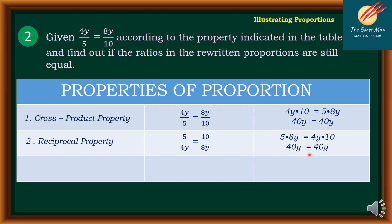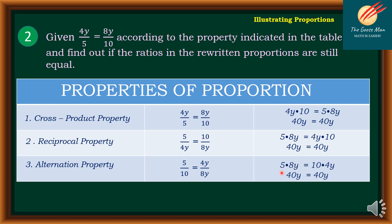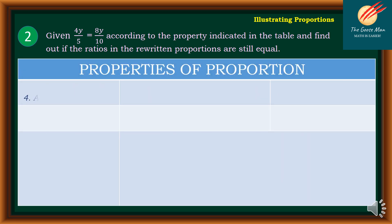Moving on to the alternation property: 5 over 10 is equal to 4y over 8y. Using the cross-product, 5 times 8y is equal to 10 times 4y, giving 40y equals 40y — still a proportion. Moving on to property number 4, the addition property: 4y plus 5 all over 5, is it equal to 8y plus 10 all over 10? Using cross-multiplication and the distributive property, 10 times 4y equals 40y and 10 times 5 equals 50, while 5 times 8y equals 40y and 5 times 10 equals 50.